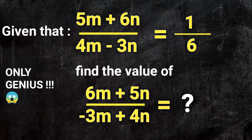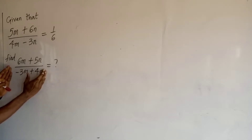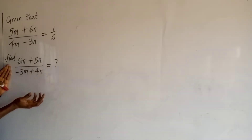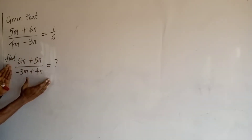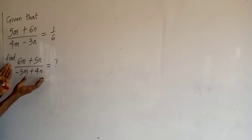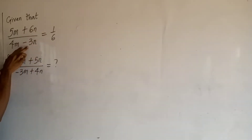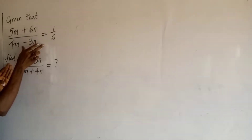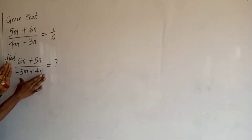We are given that (5m + 6n) upon (4m − 3n) is equal to 1 over 6, and we are asked to find the value of this expression. This question would have been so easy if we knew the value of m and the value of n — we would just plug them in and get the value of this expression. But it is very impossible to get the distinct value of m and n from a single algebraic equation. The only thing we can do is get the relationship between m and n, and then figure out the value of this expression.